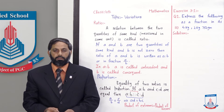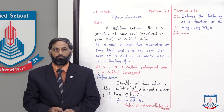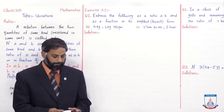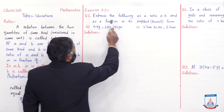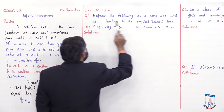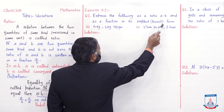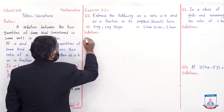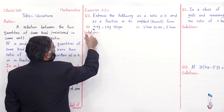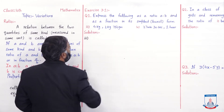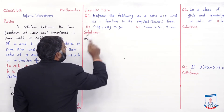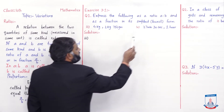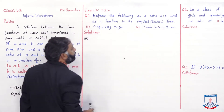تو extreme quantities کی product equal ہوتی ہے product of mean quantities کے۔ اب exercise 3.1 start کرتے ہیں۔ Question number 1 ہے: express the following as a ratio A:B and as a fraction in its simplest/lowest form۔ Third اور fourth part میں کر رہا ہوں۔ Third part کرتے ہیں پہلے۔